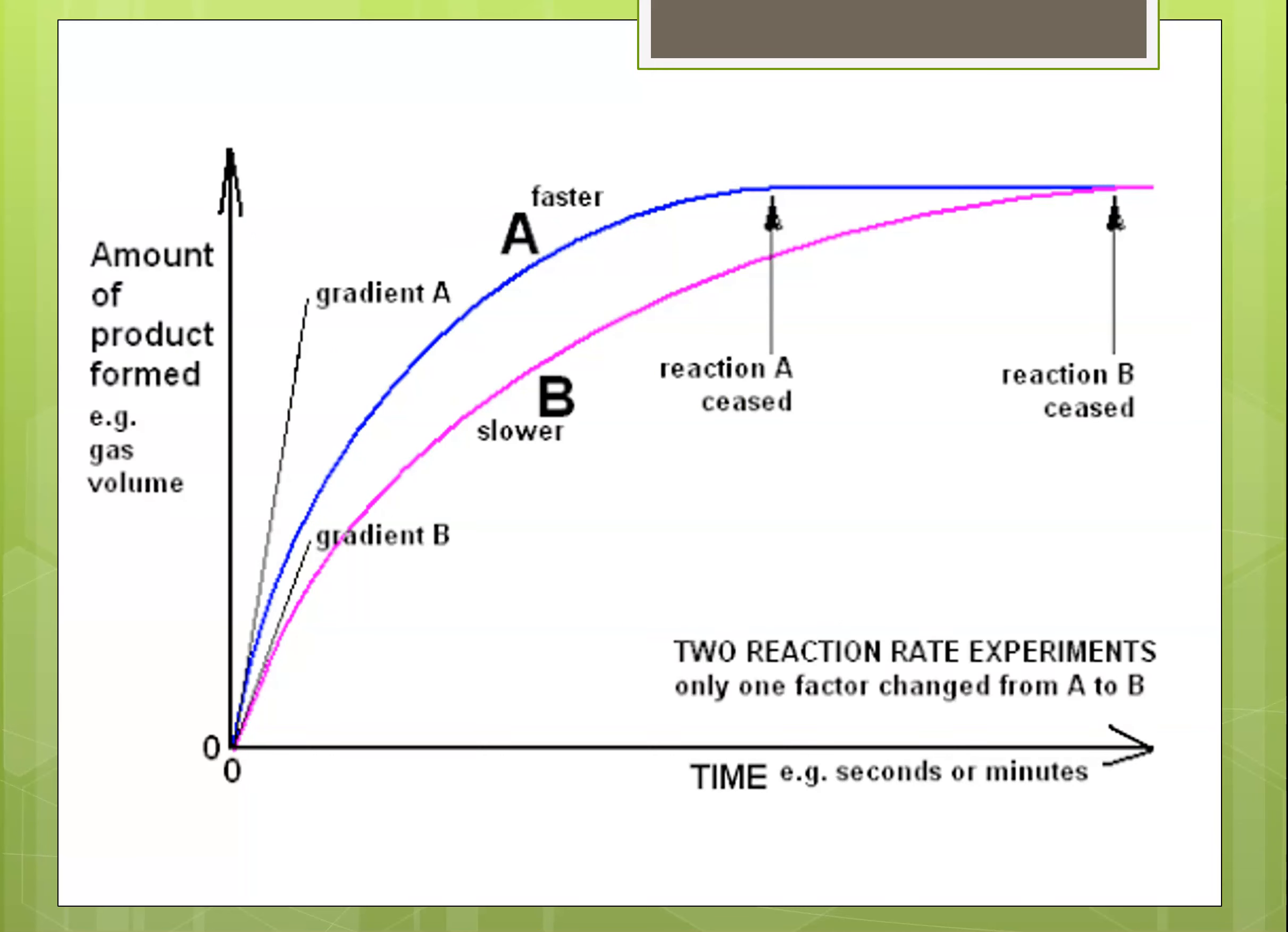So this graph illustrates that quite nicely. We've got two different reaction rates. The pink line at the bottom is showing a slower rate of reaction, the blue line at the top is showing a faster rate of reaction. What you've got on that y-axis is the total amount of product formed. And you'll see at the end of that reaction, both reactions finish off at the same point. They both have produced exactly the same amount of product.